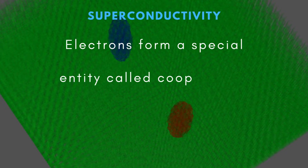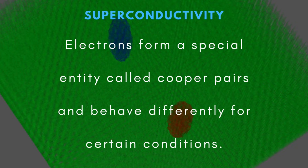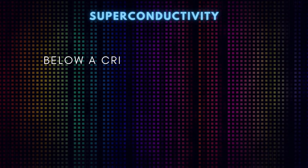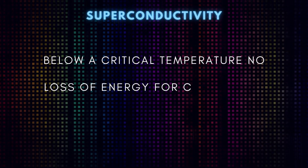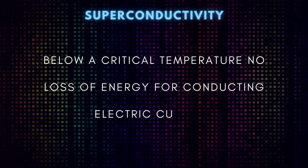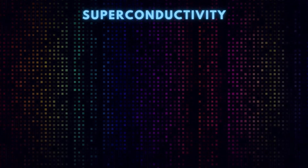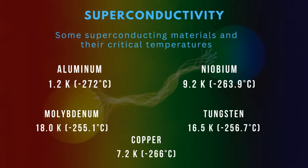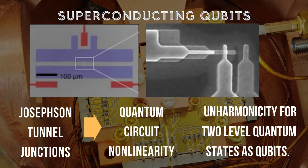Superconductivity is a phenomenon where, below a critical temperature, there is no loss of energy for conducting electric current. This is because electrons form so-called Cooper pairs and behave differently. Certain superconducting materials, such as aluminum, niobium, molybdenum, tungsten, and copper, may be used to build qubits due to their unique properties. These materials have critical temperatures that are suitable for quantum computing applications.